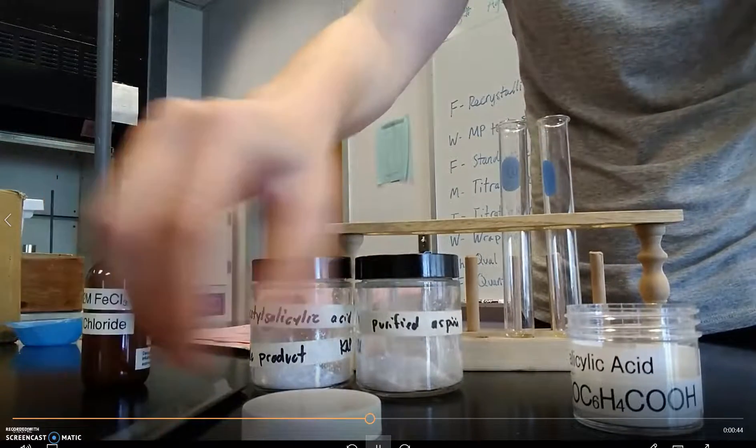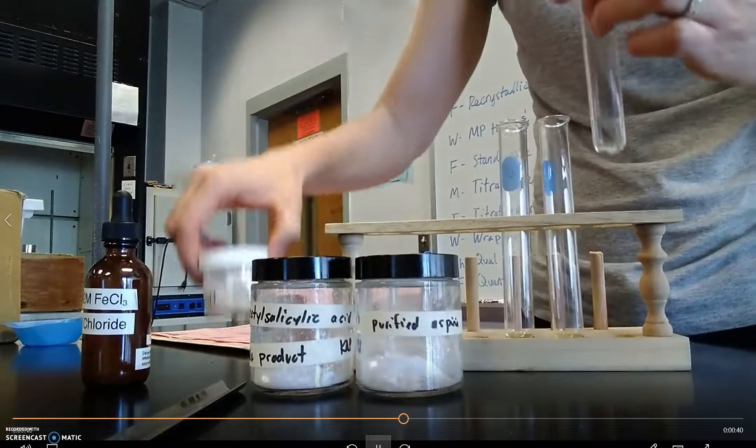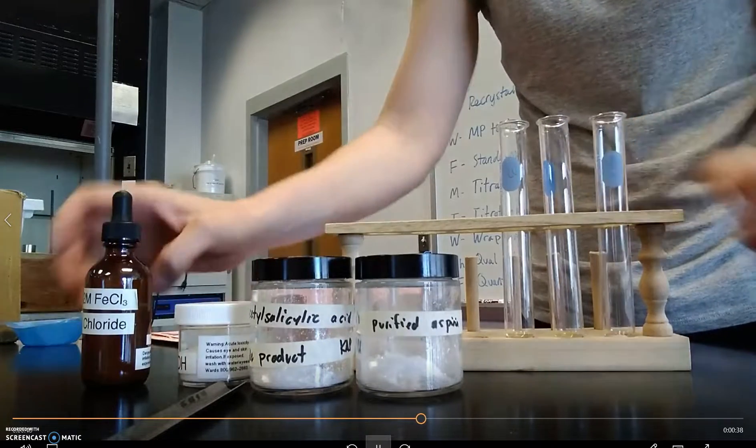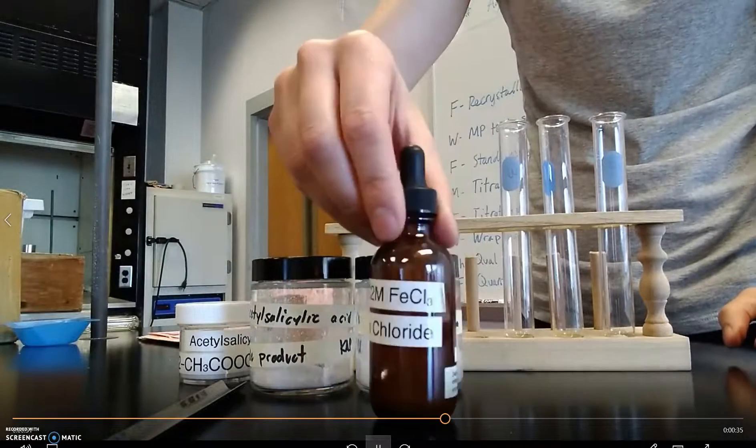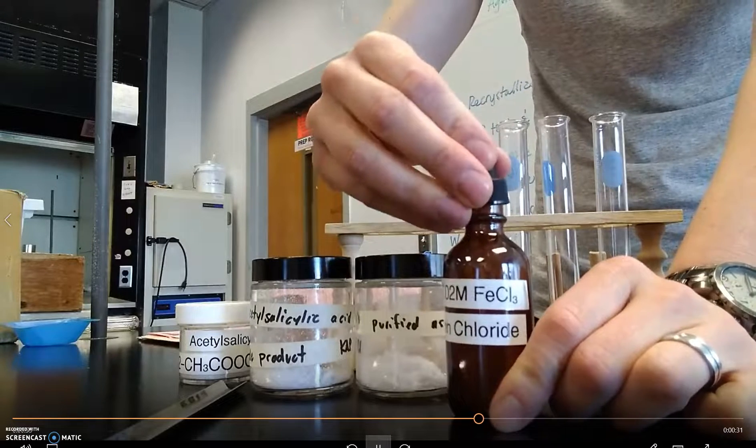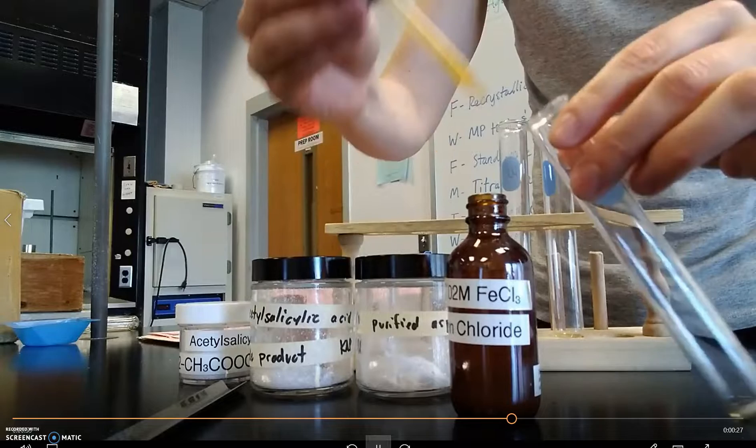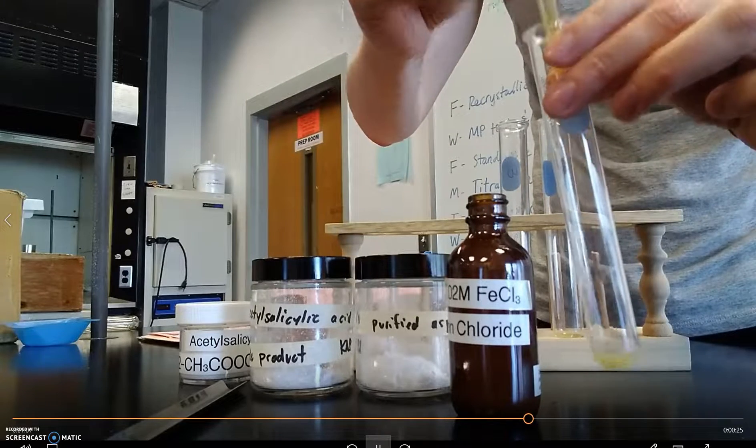That's definitely more than I need but I'm going with it anyway. Put that in the test tube. Get that out of the way and we're going to add iron chloride to it. The iron chloride is in brown bottles, it's light sensitive.